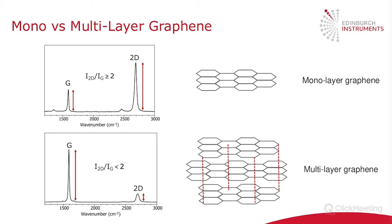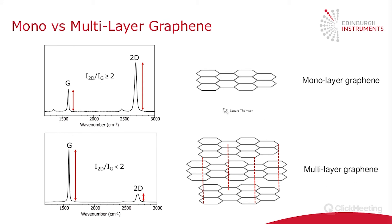Another example of where Raman microscopy can be used in graphene is determining the number of layers. In the strictest sense, graphene only refers to a single monolayer. However, it's quite difficult to make monolayer graphene, and typically you can end up with multilayer graphene — generally up to about five layers is still considered graphene. This is important because the electronic properties change depending on whether you have monolayer or multilayer graphene, and Raman microscopy can distinguish between these two regimes.